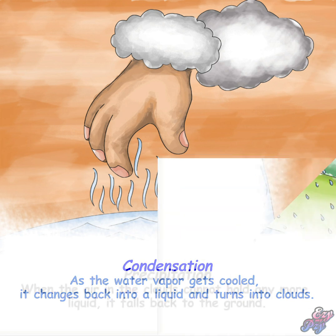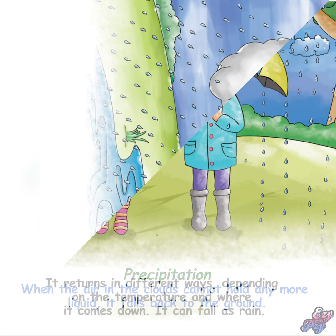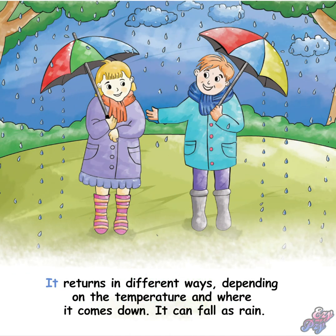Precipitation. When the air and the clouds cannot hold any more liquid, it falls back to the ground. It returns in different ways depending on the temperature and where it comes down — it can fall as rain.